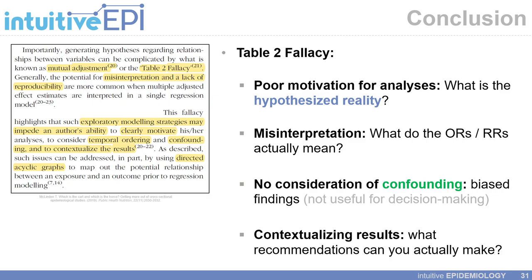In conclusion, based on comments I had made in a commentary on another article that might have committed the Table 2 fallacy, this issue results in poor motivation for analyses — we must ask, what is the hypothesized reality? This fallacy can lead to misinterpretation of what the odds ratios, risk ratios, or hazard ratios actually mean. Often, in papers impacted by the Table 2 fallacy, there is no consideration of confounding, and the findings are clearly biased and not useful for decision-making. The fallacy also makes it difficult to contextualize your results and make recommendations.